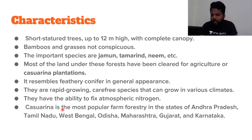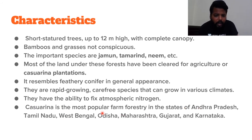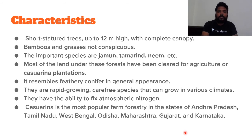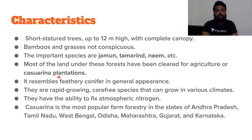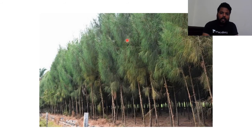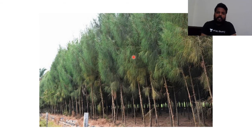Casuarina plantations were in the news recently — there are good chances of a question from this topic. Casuarina is the most popular farm forestry in Andhra Pradesh, Tamil Nadu, West Bengal, Odisha, Maharashtra, Gujarat, and Karnataka, especially Tamil Nadu. Casuarina resembles feathery conifer forestry, is a rapid-growing, carefree species that can grow in various climates, and most importantly, has the ability to fix atmospheric nitrogen.